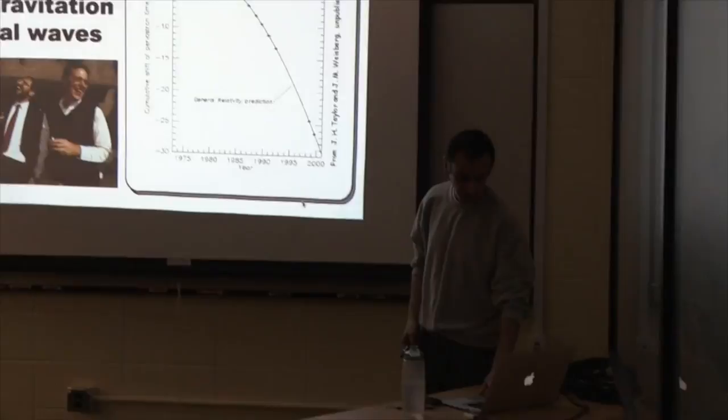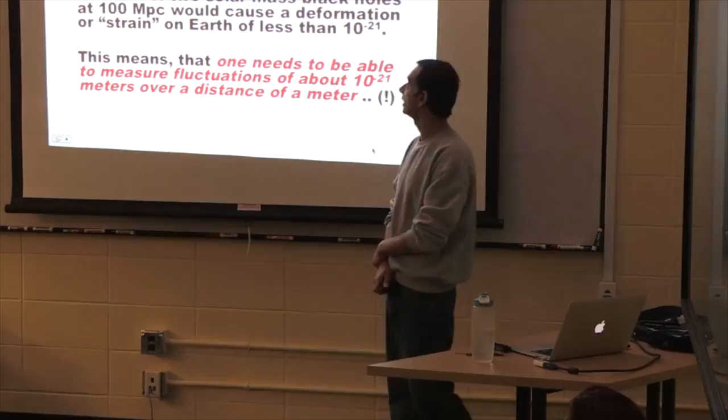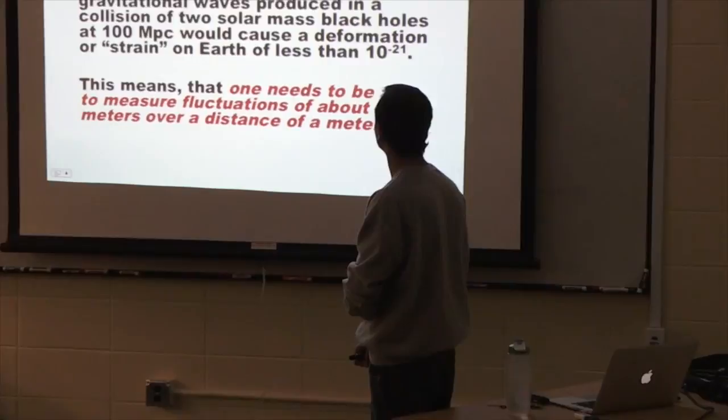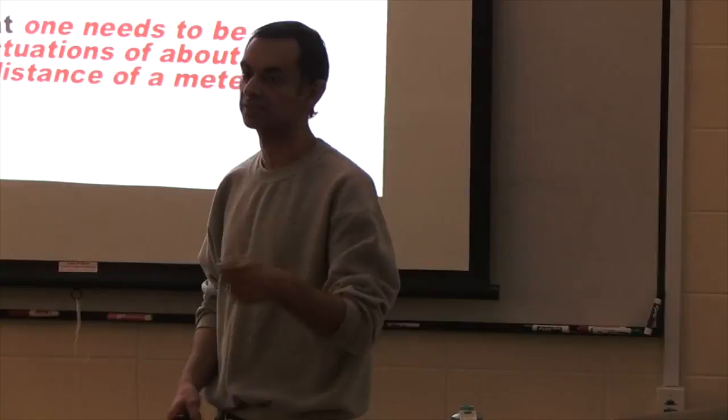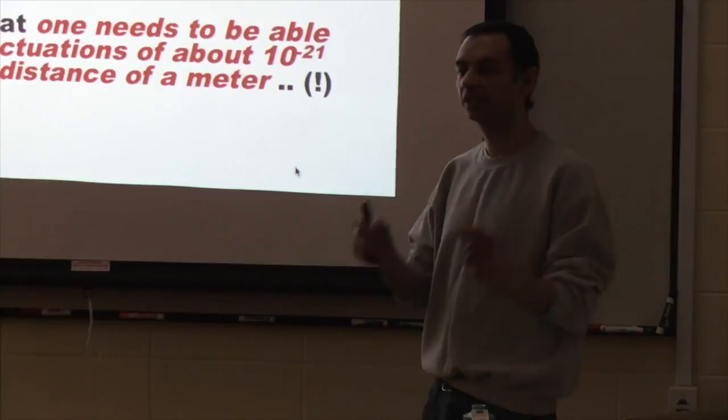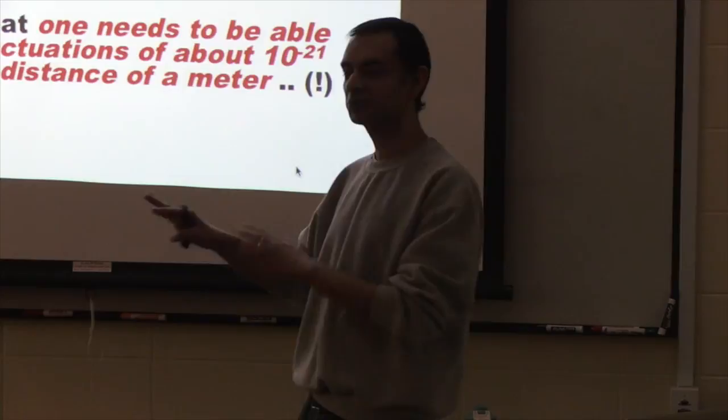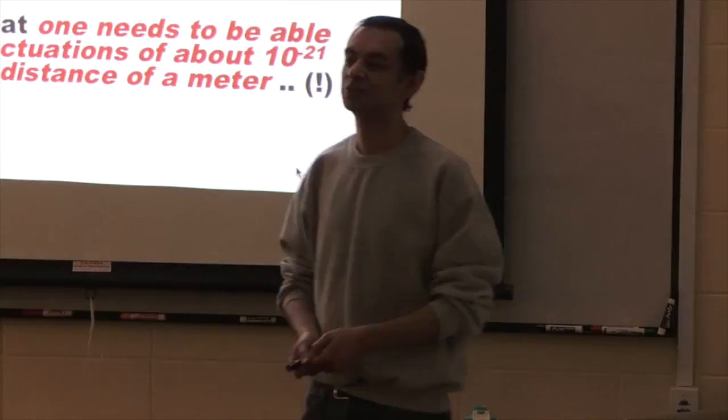Hulse and Taylor were awarded the Nobel Prize in the 90s for this discovery — the clearest indirect proof that these waves exist. So why hadn't we seen them directly? Going back to the point that gravitational waves interact very weakly with matter: that's good for astronomy because they pass through anything, but it also means the only way to measure them is to interact with them — and if they interact weakly, detection is very difficult.